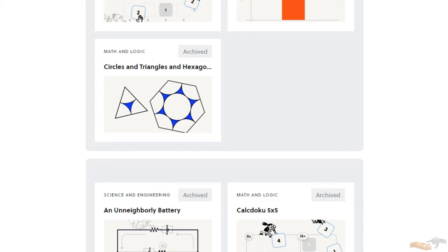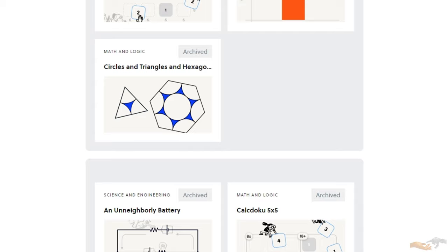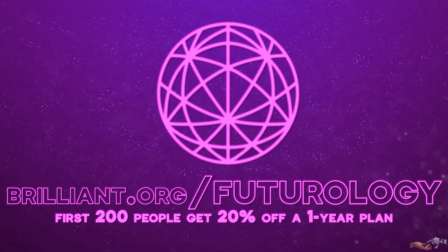To support Futurology and learn more about Brilliant, go to Brilliant.org slash Futurology, and sign up for free. Additionally, the first 200 people that go to that link will get 20% off their annual premium subscription.